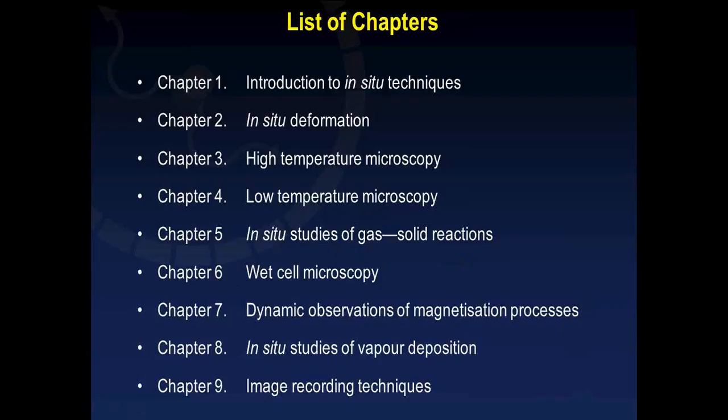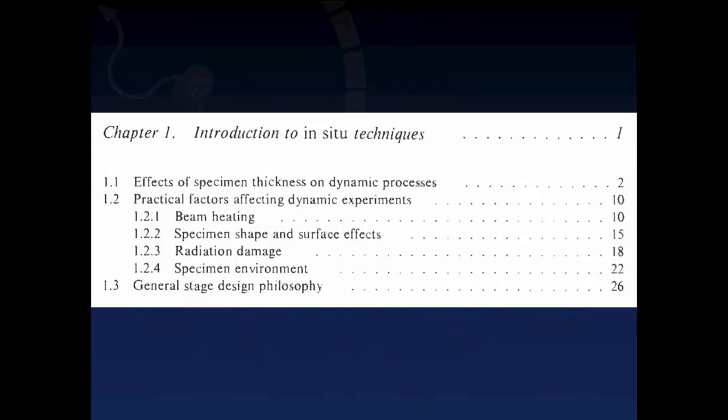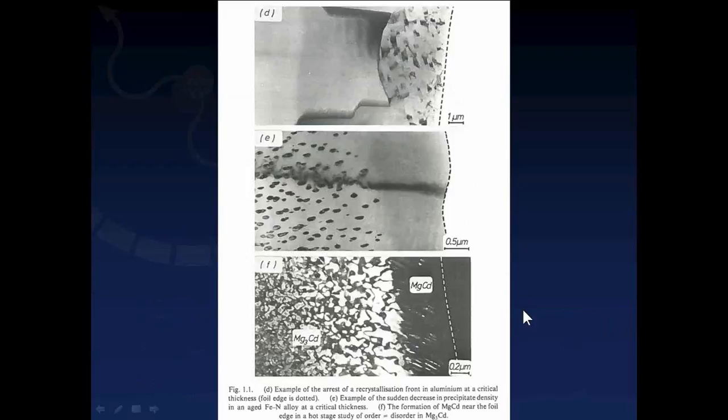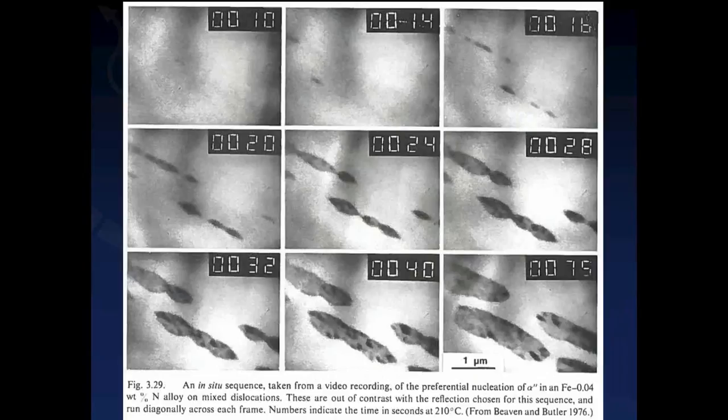The Butler and Hale book, written in 1981, coincided with the era of high-voltage electron microscopy. It was thought at that time that specimen thickness played an important role, and so a lot of attention was focused on the effect of specimen thickness on dynamic processes. In fact, the first chapter of this book was dedicated to the effect of critical thicknesses in thin-foil TEM samples.